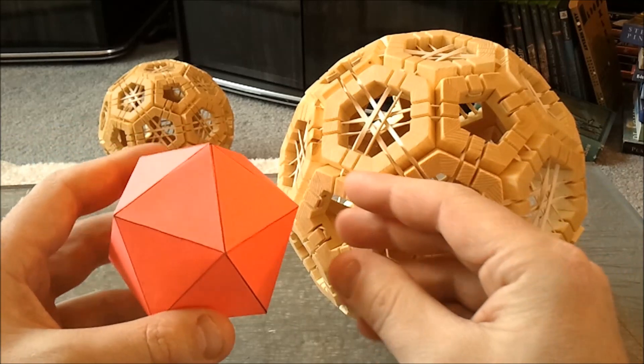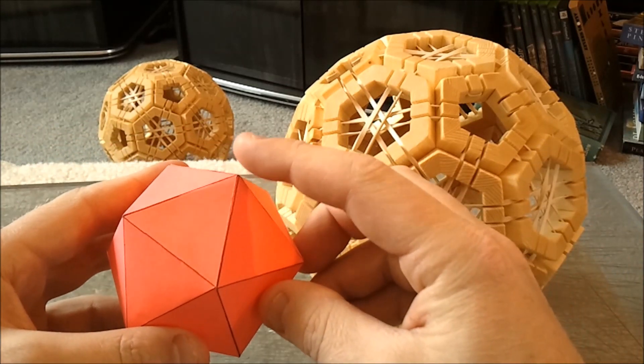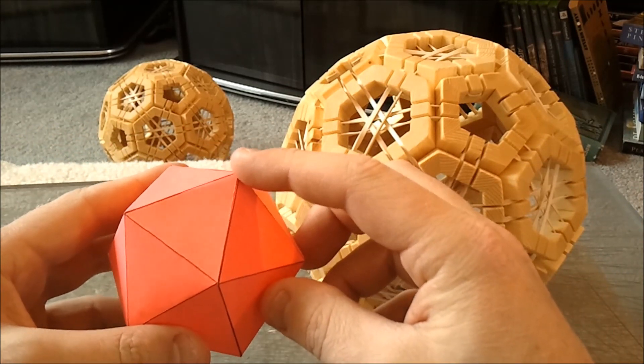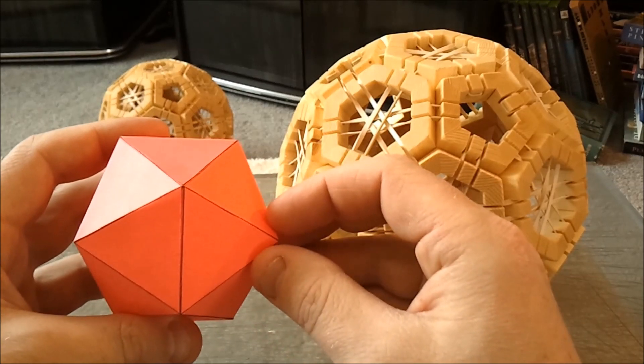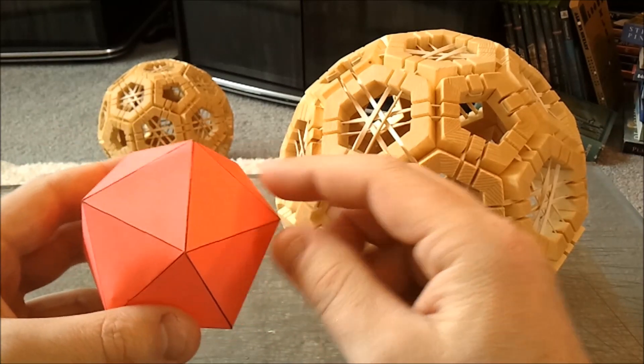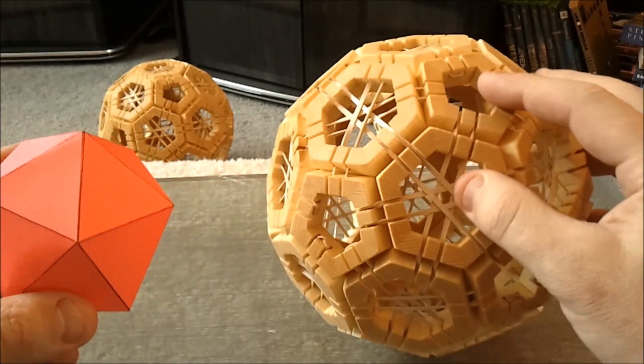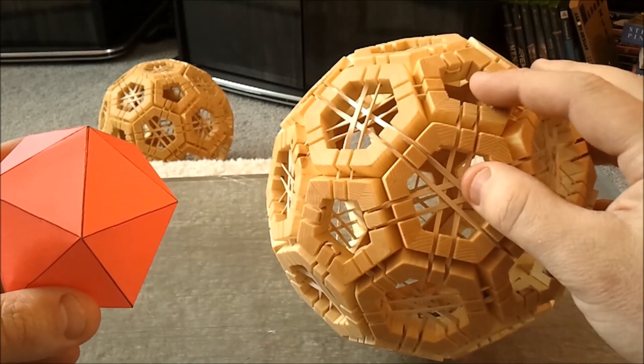Now this is what truncation is. Imagine that you were to sand these tips off, these vertices, on the icosahedron. It would make a flat spot, and that flat spot would have five sides. And that's what the pentagons are.